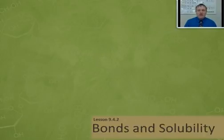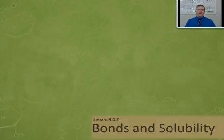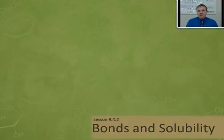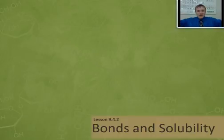The concept we're going to be taking a look at is how bonds affect the solubility of a substance. Solubility means almost exactly what the word sounds like — it's the ability of something to dissolve. When I say dissolve, I mean it's the ability of something to spread out completely evenly in another substance. Let's take a look at how bonds affect solubility.